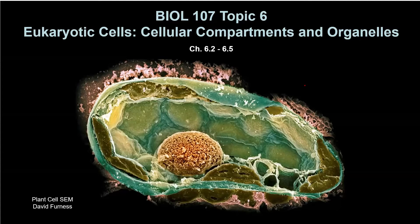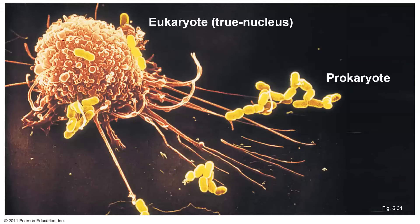Switching gears now to topic six — we're going to talk about eukaryotic cells. These are the ones with nuclei. Remember, 'eu' means true and 'karyon' means nucleus. We like them because that's what we are — we are eukaryotes. Eukaryote means true nucleus; prokaryote means no nucleus.